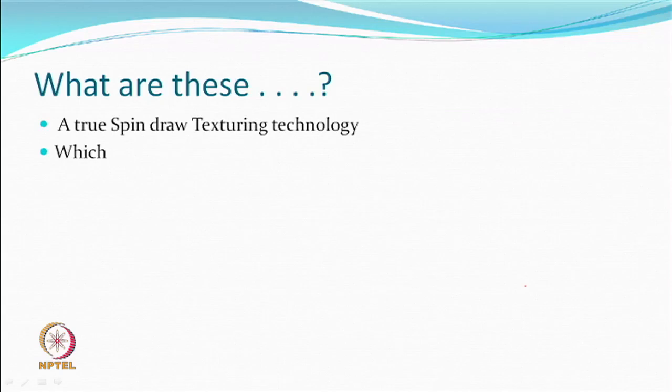Another interesting thing people realized is that this technology can allow the spinning process to be combined with texturing, which we can discuss a little later. Therefore it became more commercially successful and attractive. It did not require two machines; you can have one machine which can do everything. The fluid that is used is hot air rather than the cold compressed air or room temperature compressed air used in air jet texturing.